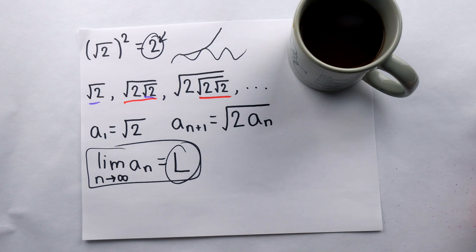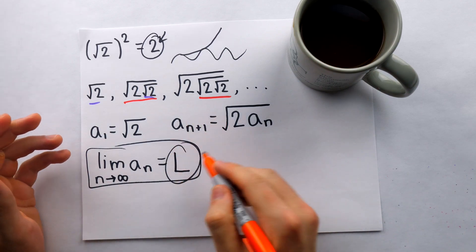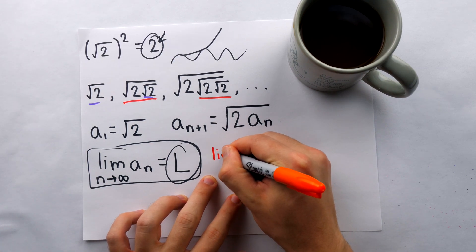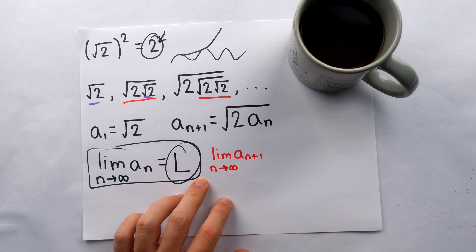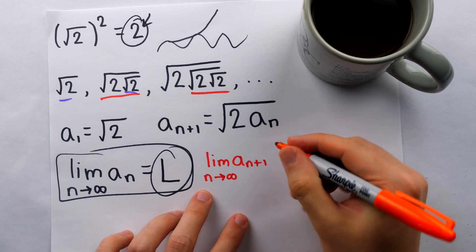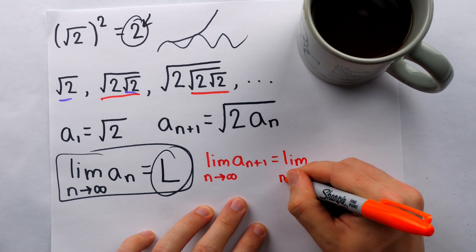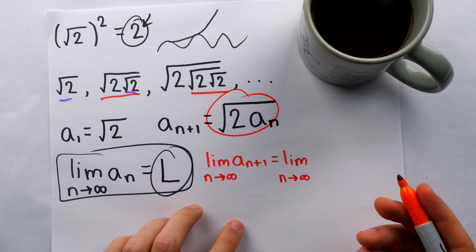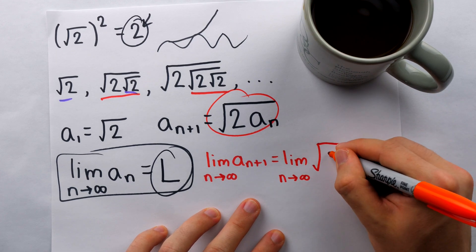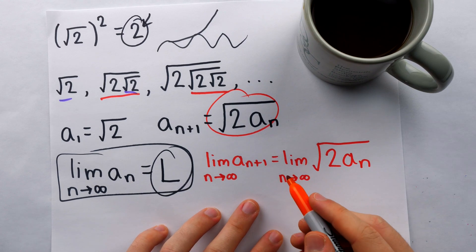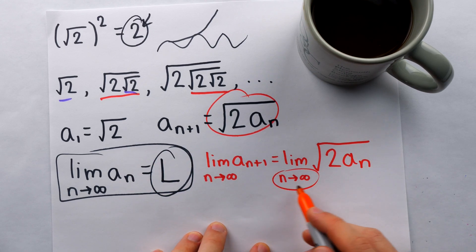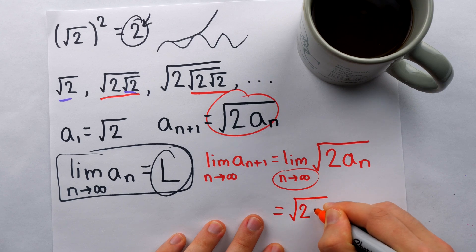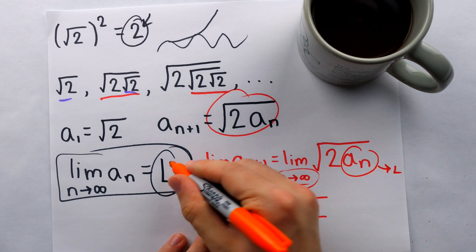I'll write this argument in orange. The key, because the sequence is recursively defined, is to actually look at the limit of aₙ₊₁ as n goes to infinity. Now the limit of aₙ₊₁ as n goes to infinity — I know that this is the same as the limit as n goes to infinity of the square root of 2 times that previous term aₙ, because I can replace aₙ₊₁ with how it's defined. But we know as n goes to infinity, aₙ goes to L, because we already assumed that the limit of aₙ exists and we've called it L. So the limit of this thing, as n goes to infinity, would be the square root of 2 times L, because as n goes to infinity aₙ must approach L — that's what we are assuming.